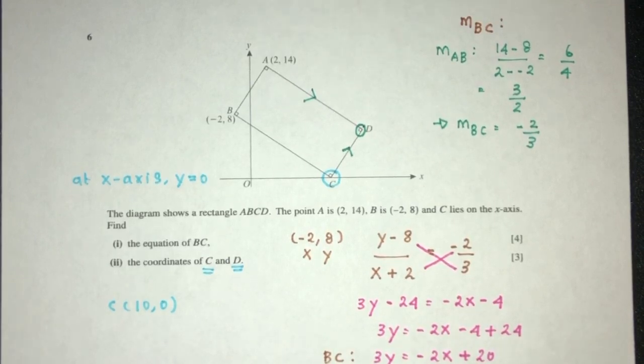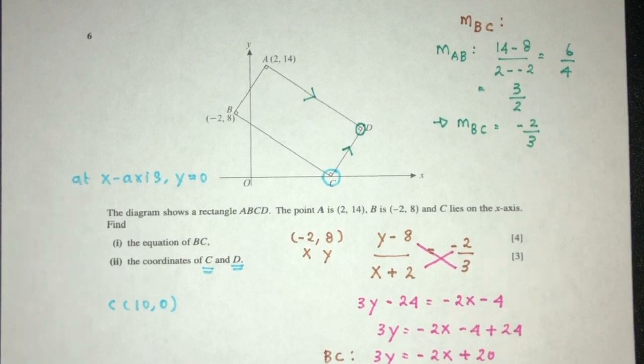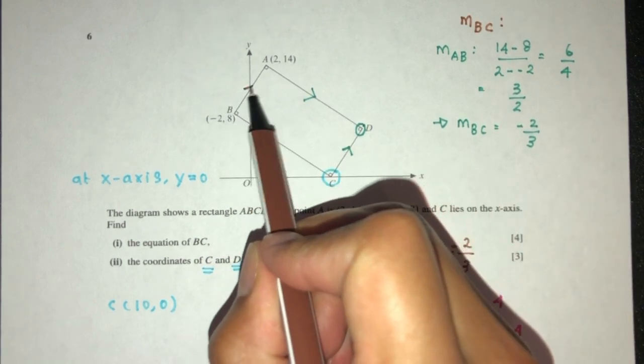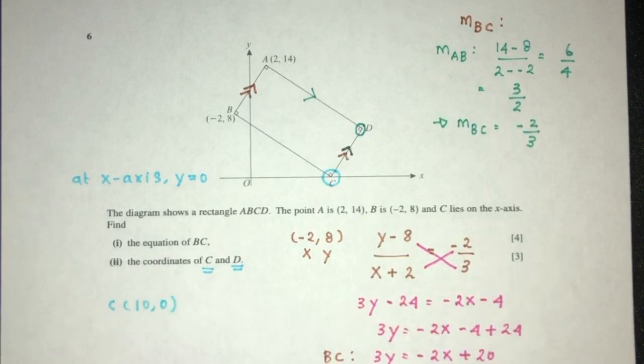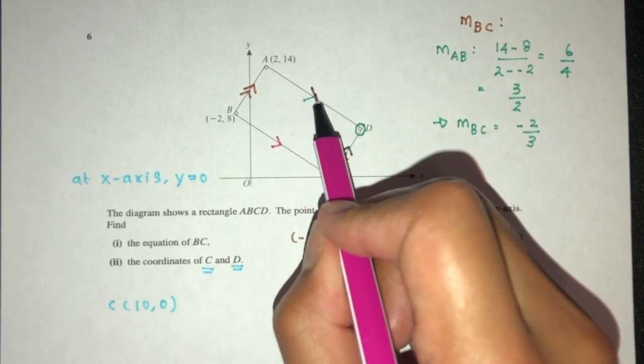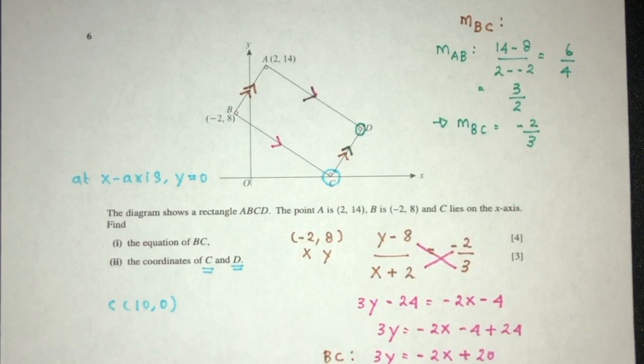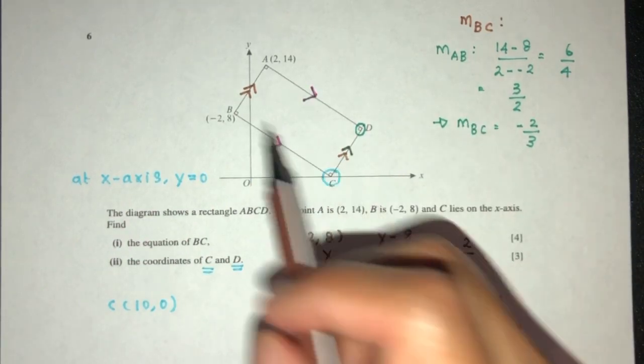But that is one way of doing that. But the easiest way is actually, we can just move. Because it is a rectangle, we understand that these two sides must be in the same direction. And this side is in the same direction as this. So what can we conclude?